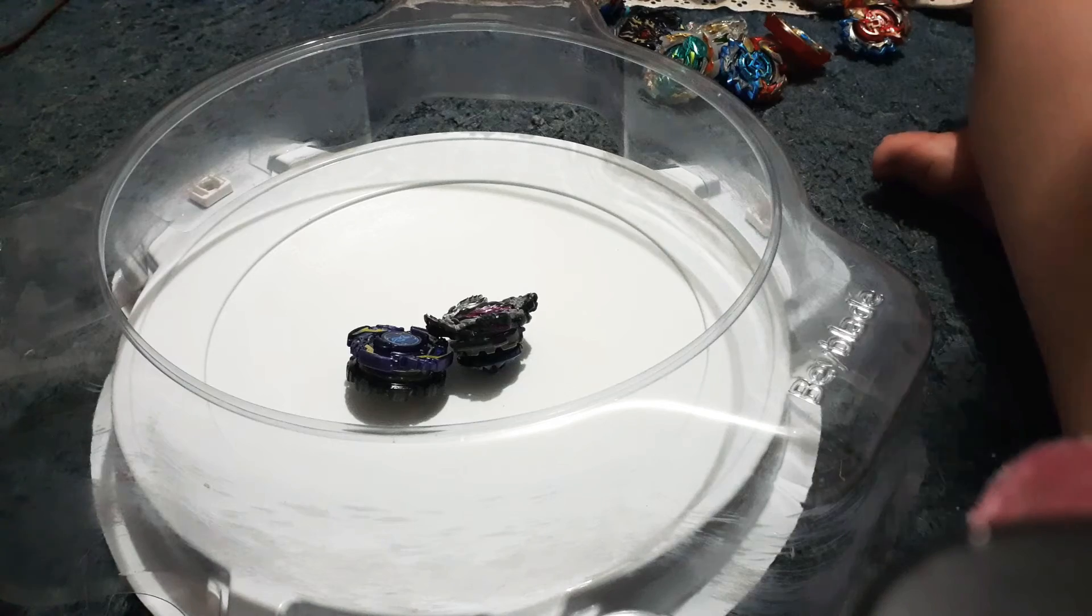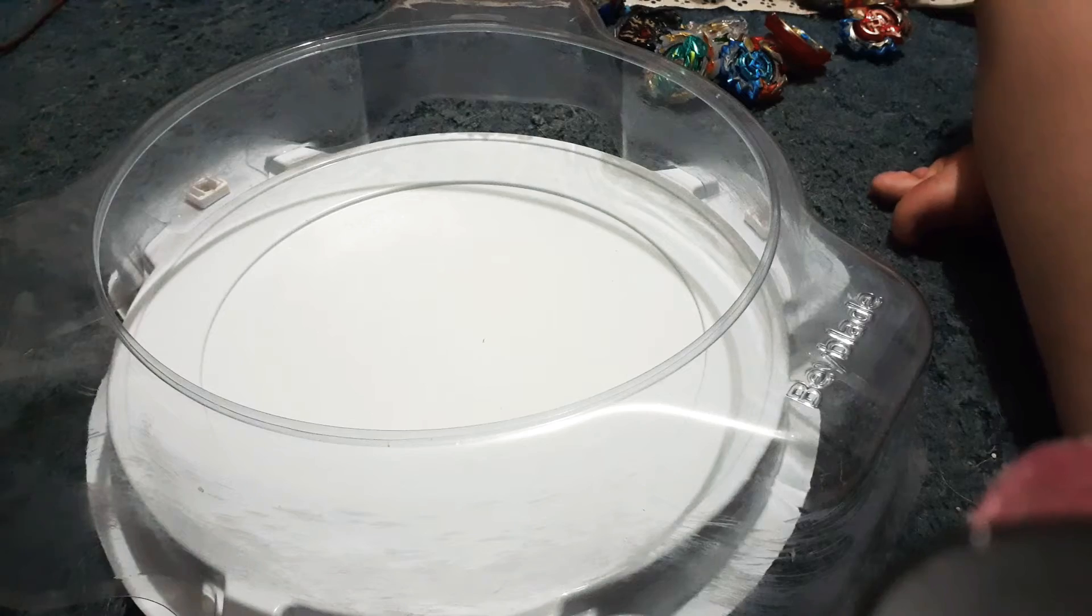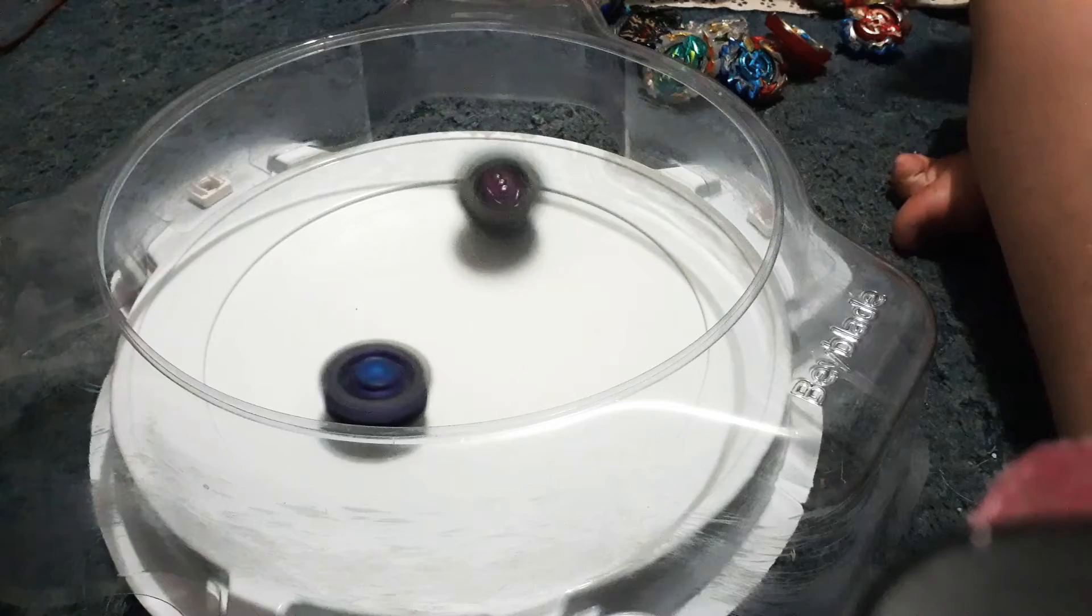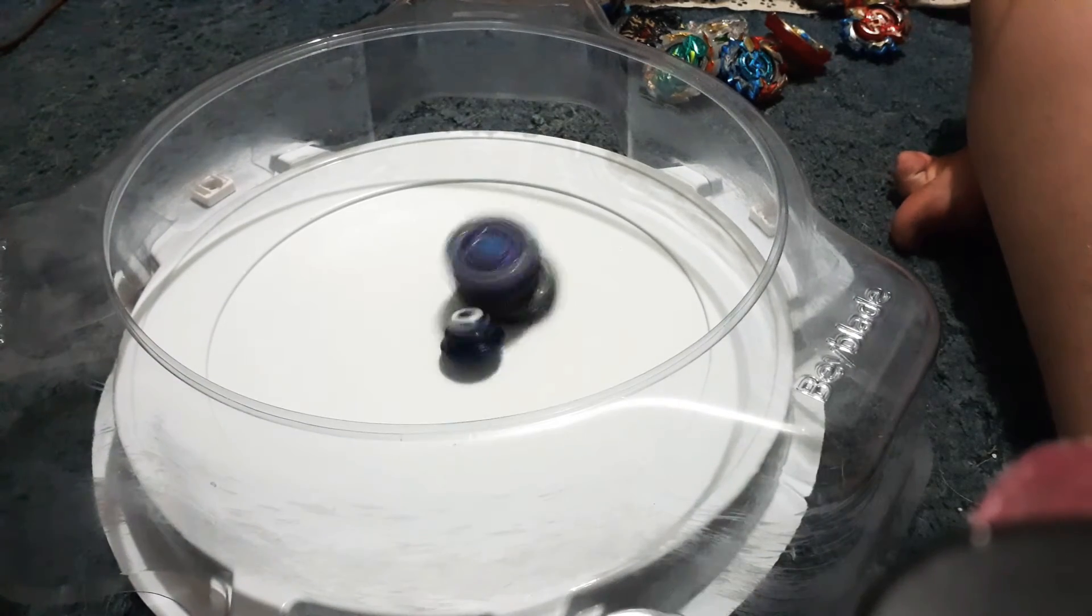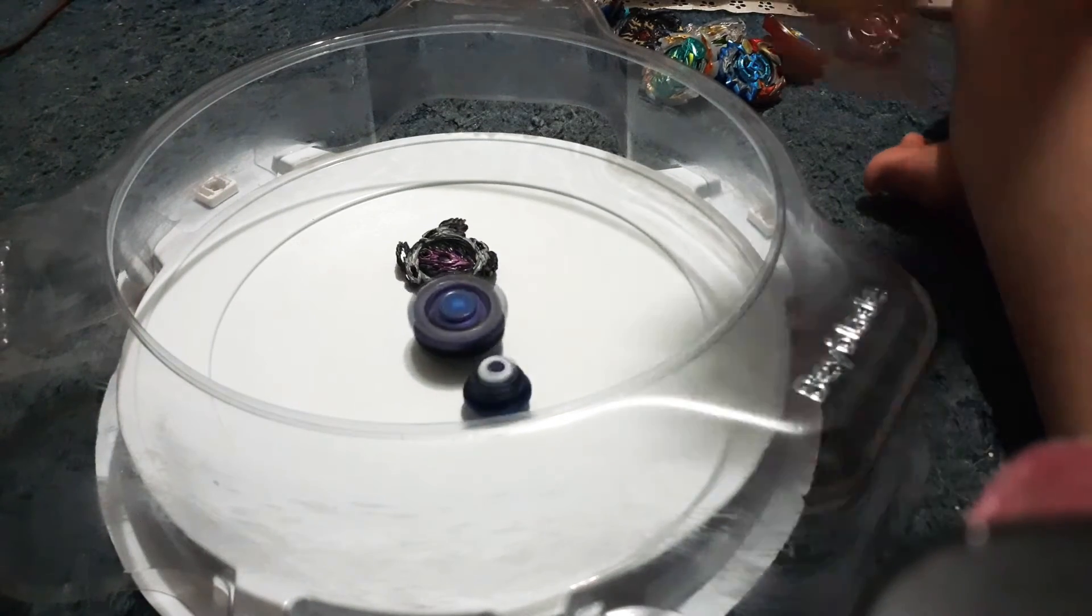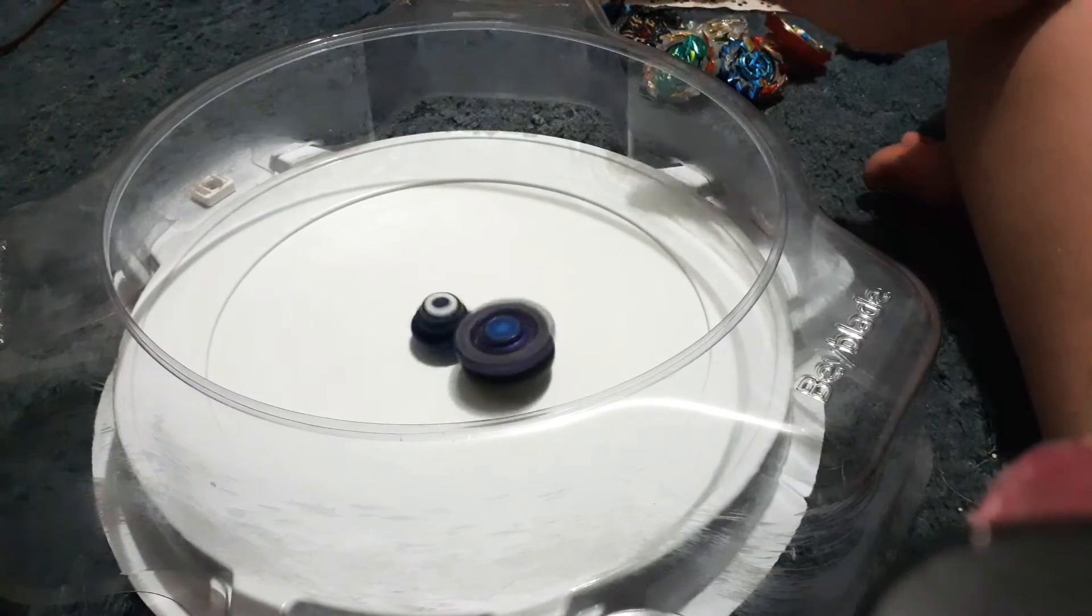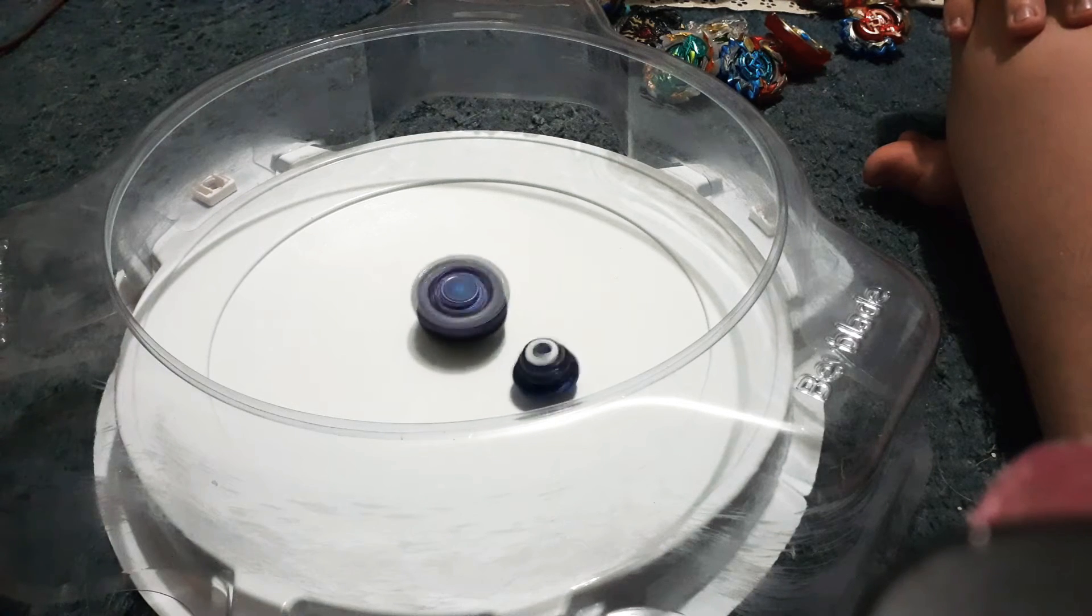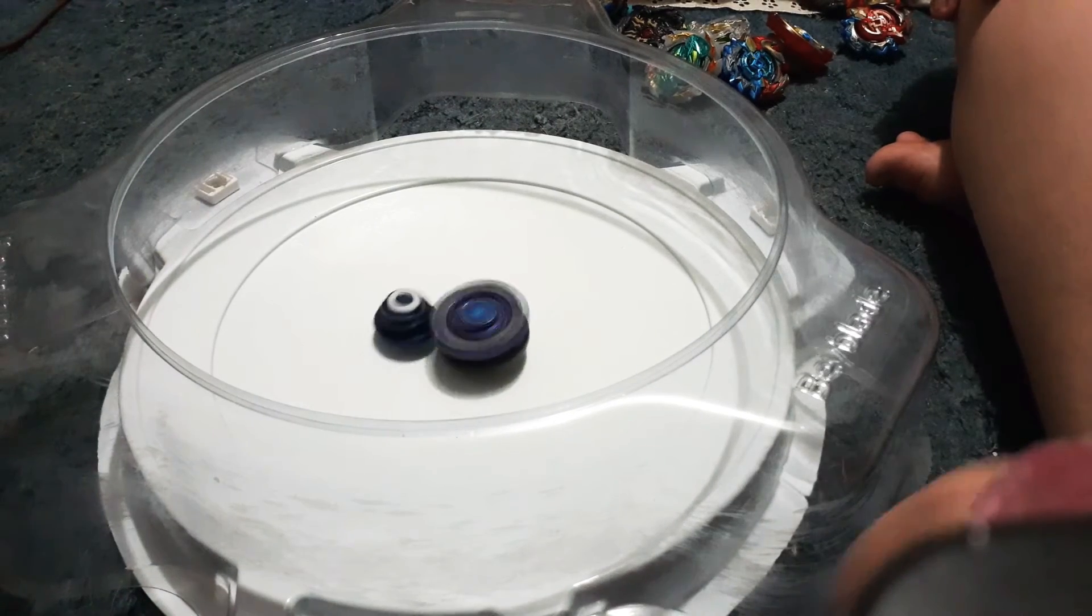Of course, battle goes to three points, burst is two, everything else is one. Three, two, one, let it rip. Whoa! Talk about a jump! No way! Wool Board, Hound Dog got the burst! The driver spins, wait. Okay, this is getting on camera. So the charge driver is currently spin-stealing from Wool Board. That's very entertaining.